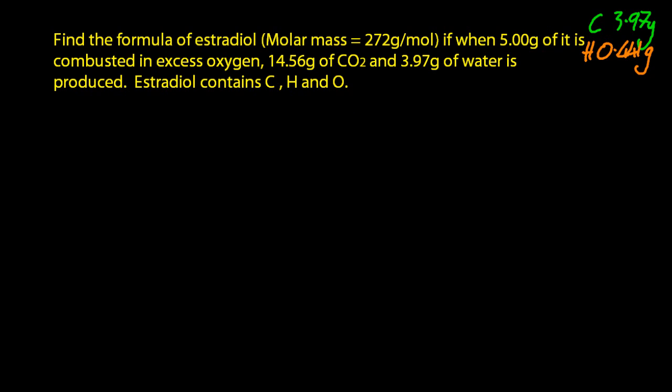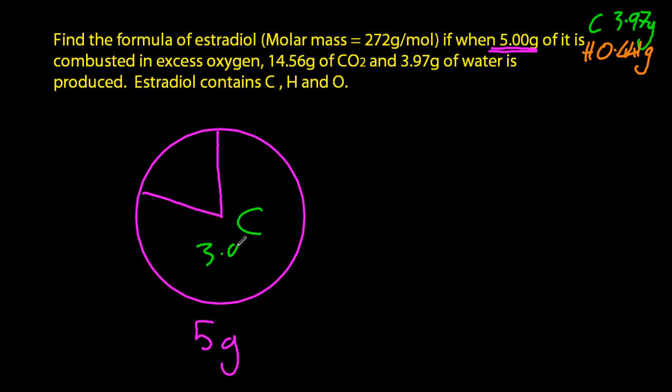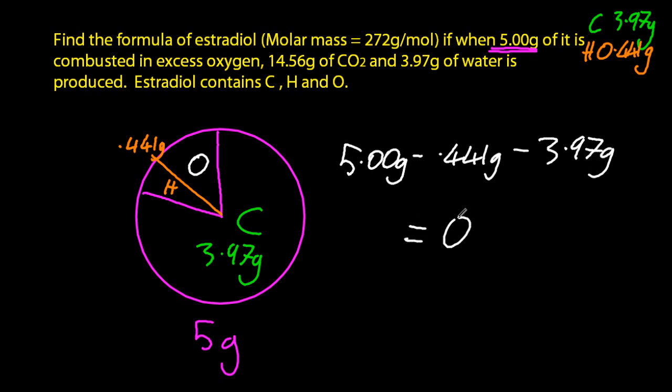What about the oxygen? That's in the estradiol and in the air. So how do I work out how much of that I've got? Well, if you imagine this is the 5 grams of the estradiol, 3.97 grams is carbon, 0.441 grams is hydrogen, so the rest must be oxygen. So I'm just going to subtract those masses from 5 grams, which gives me 0.589 grams of oxygen.